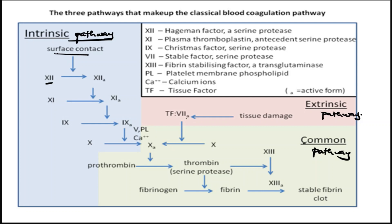Factor X is activated using calcium and factor V. The activated factor X then activates prothrombin — prothrombin is a beta globulin produced by the liver. This activated prothrombin is converted into thrombin. Thrombin then converts fibrinogen — a plasma protein — to fibrin, and this fibrin is the one that forms a clot.